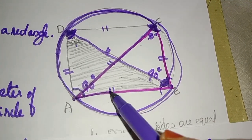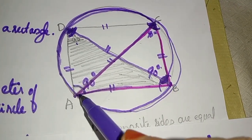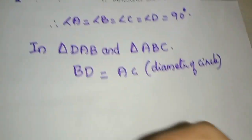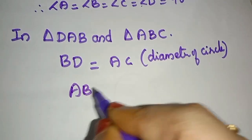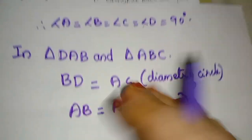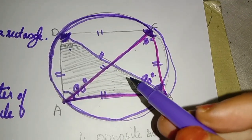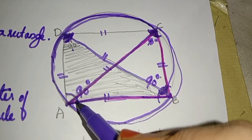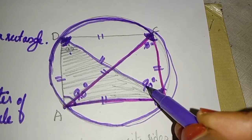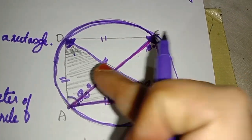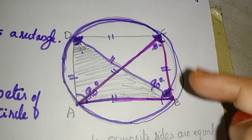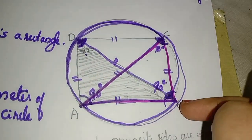The side AB is common. AB is equal to AB, common. This angle DAB is 90 degrees and angle ABC is 90 degrees. So, angle DAB is equal to angle ABC.